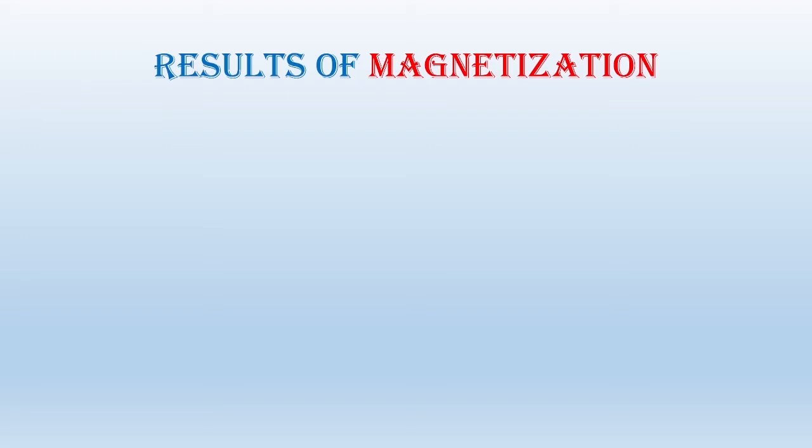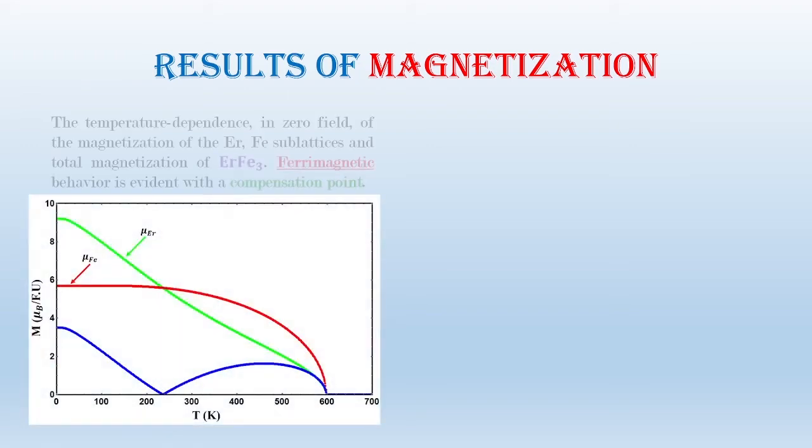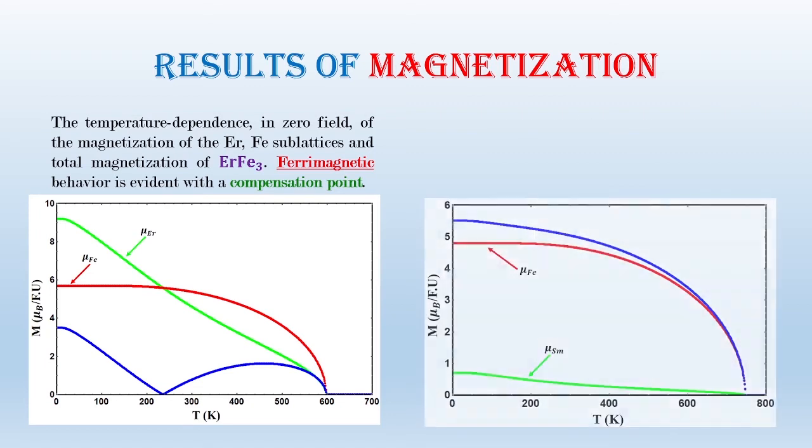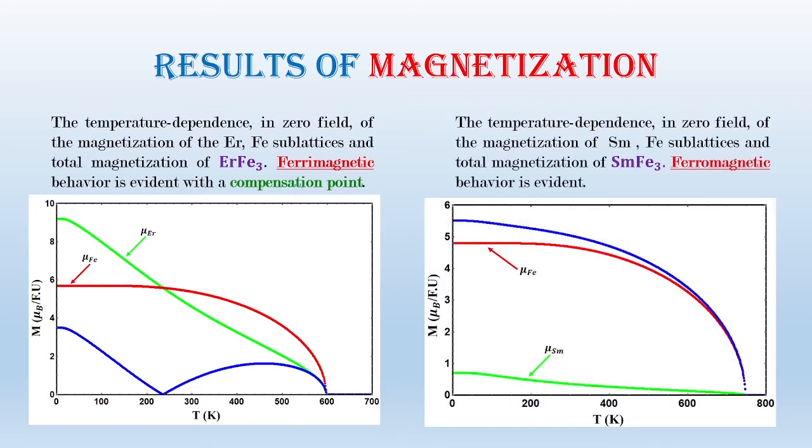Results of magnetization. Our simulation for the erbium IR3 magnetization shows a ferromagnetic coupling with a compensation point at 220 Kelvin. While the samarium IR3 shows a ferromagnetic coupling in agreement with the available experimental data.